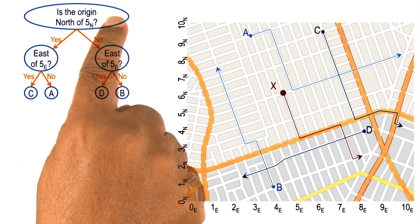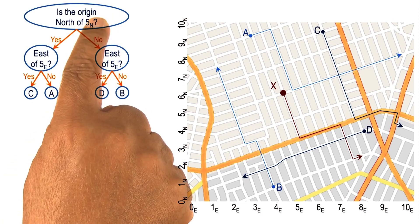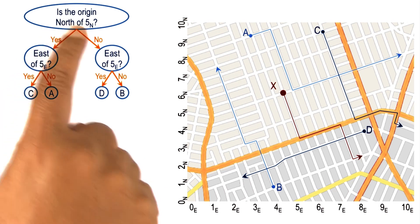So now I might have a question in the root node which says, is the origin north of 5 of n? If the answer to the question is yes, then it brings us to this branch. If the answer is no, it takes us to the other branch.